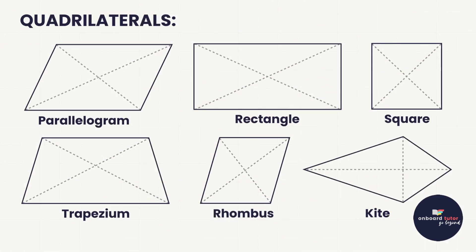Hi Grade 10s! In this video we are going to be looking at quadrilaterals, which is probably the biggest section of our Euclidean geometry syllabus for this year. A quadrilateral — quad means four — it's a shape that's got four sides, and we are particularly interested in these six different quadrilaterals.